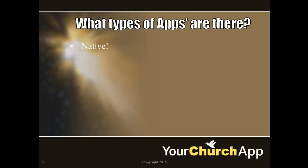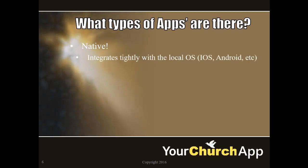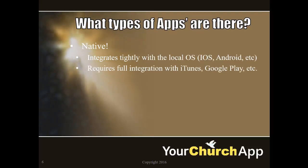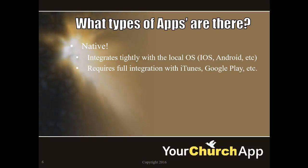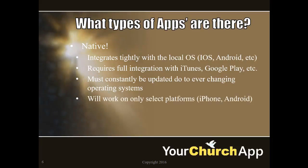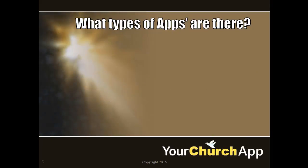What types of apps are there? First, there are native apps. These integrate tightly with the local operating system, like iOS, Android, or Windows Mobile. They require full integration with their main platforms such as iTunes, Google Play, or the Windows Store. One big issue is that these apps must constantly be updated due to the ever-changing underlying operating systems, and they only work on their selected platforms such as iPhone or Android.